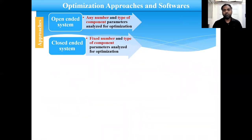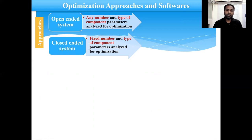So what are the different approaches for this optimization? Basically, there are two approaches: open-ended optimization, where any number and type of component parameters can be analyzed; and closed-ended optimization, where you can optimize a fixed number and type of components.